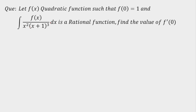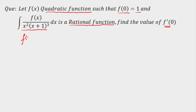Let's continue with the question. f(x) is a quadratic function such that f(0) = 1. It is given that the integration of f(x) divided by x² · (x+1)³ is a rational function. We have to find f'(0). Let's analyze this first.